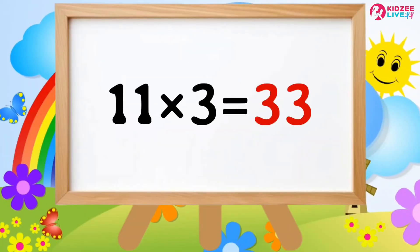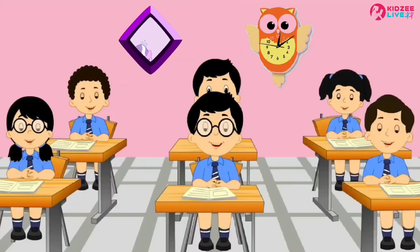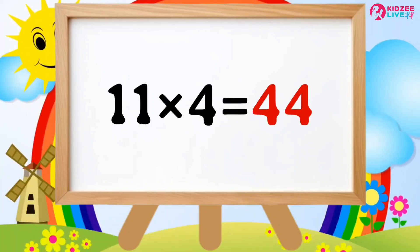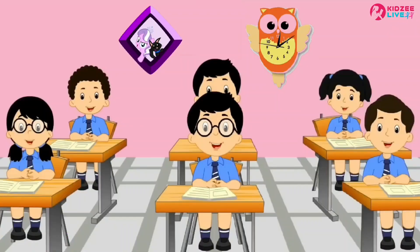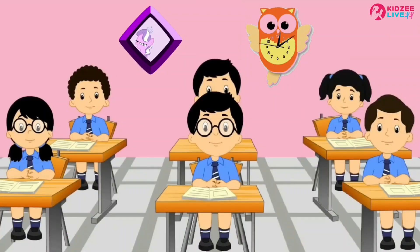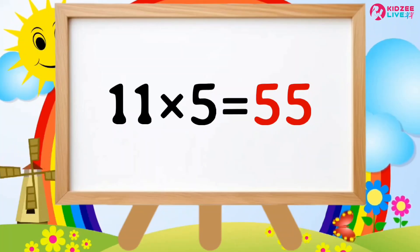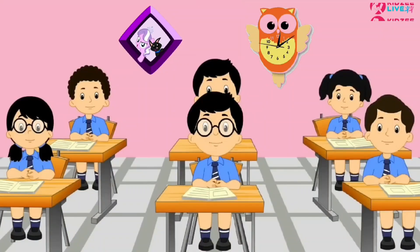Eleven threes are thirty-three. Eleven fours are forty-four. Eleven fives are fifty-five.